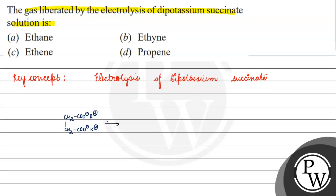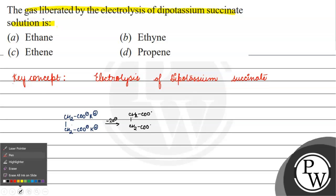At the anode, a free radical will be formed. A free radical will exist here.